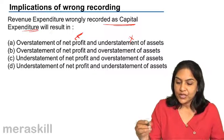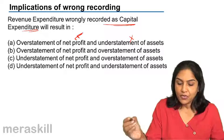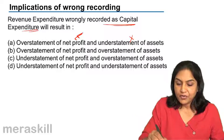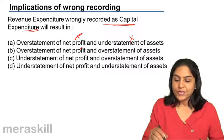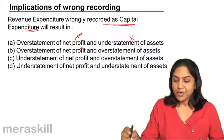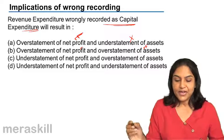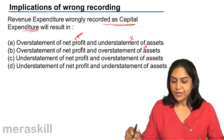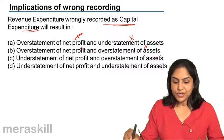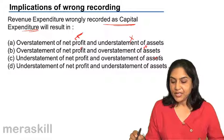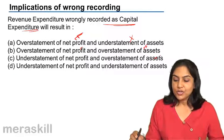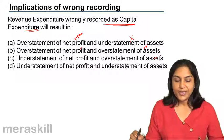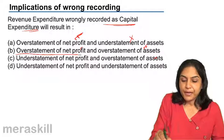So there is an overstatement of net profit and an overstatement of assets. There is no understatement of net profit. There is no understatement of assets. So the correct answer option is B.